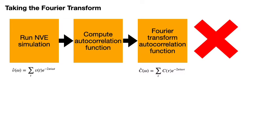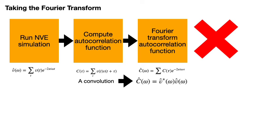We are helped once we remember that the autocorrelation function is computed using this formula. The sum over t of the product of two functions is an example of what is called a convolution. The fact that the autocorrelation function is a convolution is useful to know because of a result in the theory of Fourier transforms called the convolution theorem. This result tells us that the Fourier transform of a convolution is equal to the element-wise product of the Fourier transforms of the two functions that are being convolved. In other words, we can compute the Fourier transform of the autocorrelation function using the formula shown here.